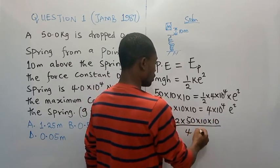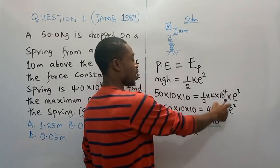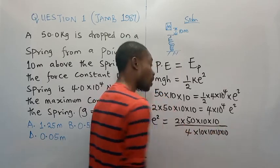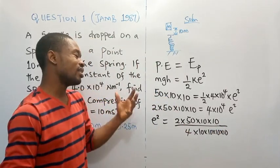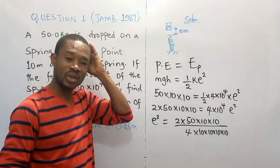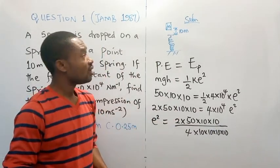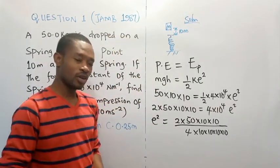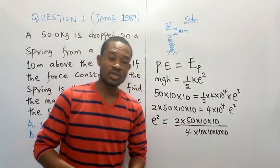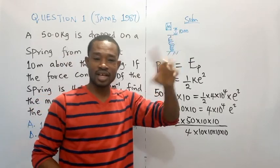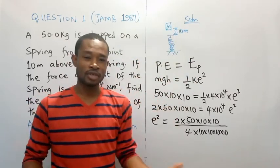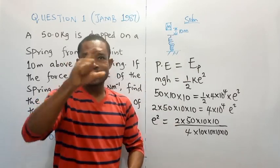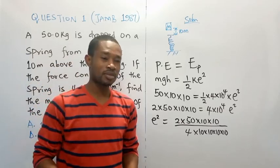That square of the compression is going to be 2 times 50 times 10 times 10, divided by 4 times. Now, look at this 10 raised to the power of 4. Permit me to write it as 10 times 10 times 10 times 10. That's the meaning of 10 raised to the power of 4. We are looking at a situation whereby you don't have calculator to use in solving this. Which, of course, in JAMB, it's as good as no calculator. I've always told students, that thing that is in the system, they say calculator, it's better you don't even use it. That's the truth. Because you waste more time using that system's calculator to solve problems.